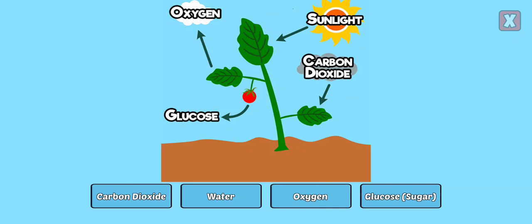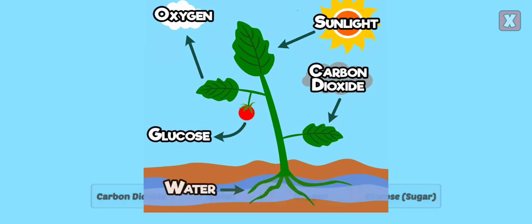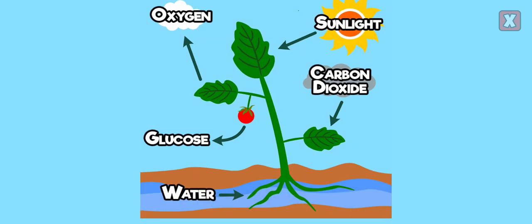What part of the process of photosynthesis is missing? Yes, water was missing. Without water, plants can't do photosynthesis and will eventually die.